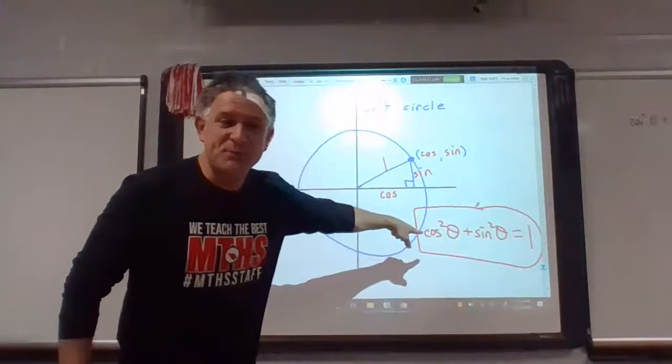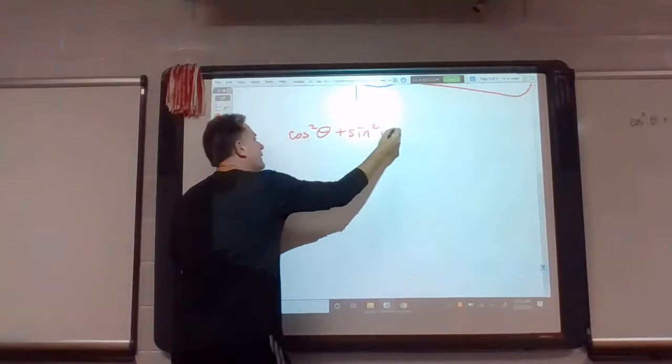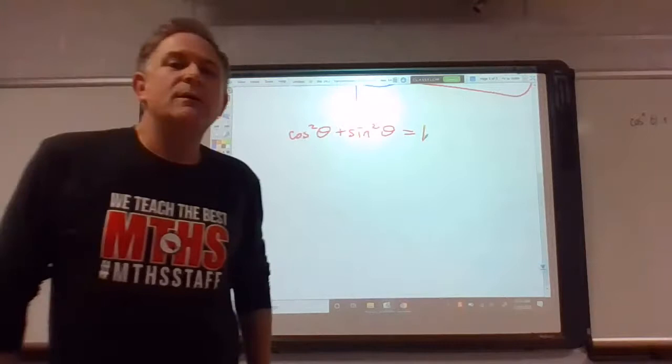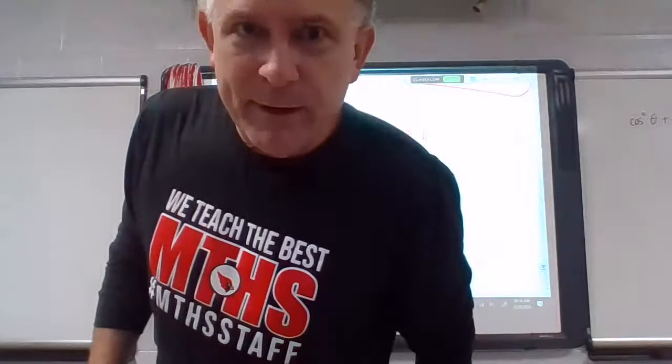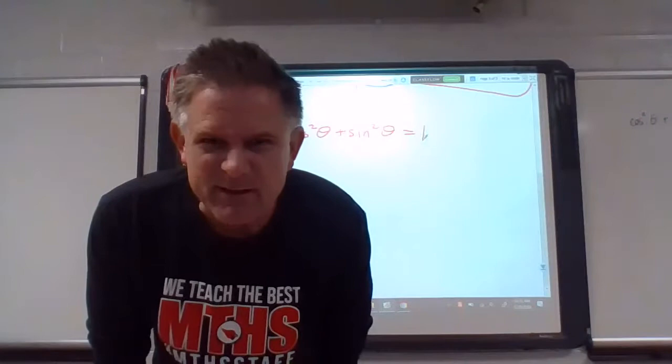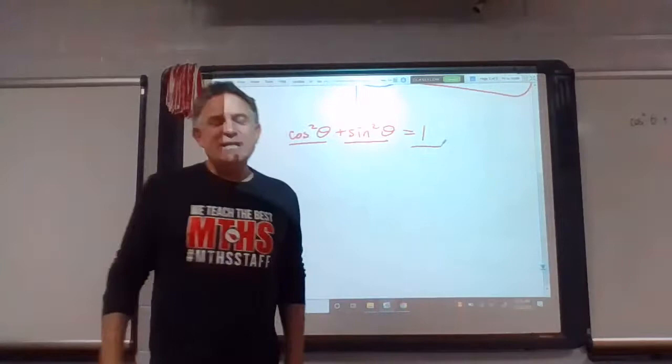It's going to be the Pythagorean theorem. It's going to say leg squared plus leg squared equals hypotenuse squared. One squared is one, and we have ourselves a delightful new identity. Delightful! Write that down, memorize it, learn it, put it in your brains. That's a big one for us. Okay, and that came from the unit circle. We're going to get two more from this one. I feel like dividing both sides by something.